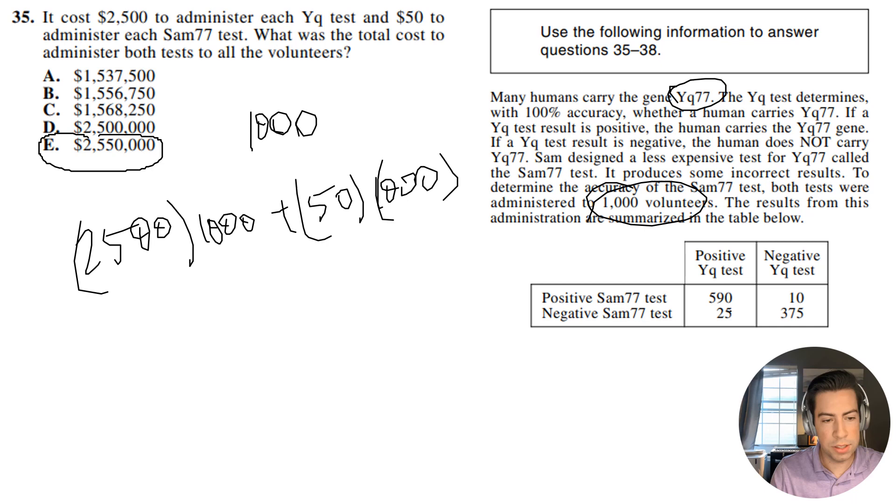And you don't have to do much. You can just look at this and say, look, I should get a clean number, right? I'm both multiplying by 1,000 and 1,000. So I should get a clean number, and I should get that extra 50,000. So let's move on to the next problem.